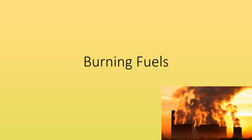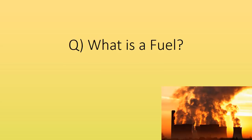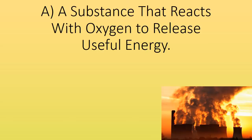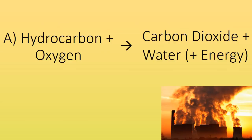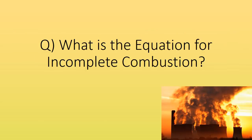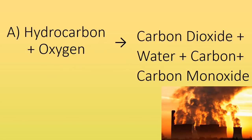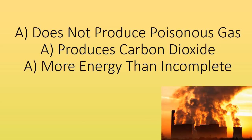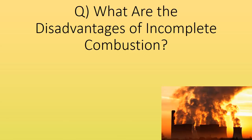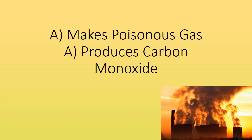Burning fuels. What is a fuel? A substance that reacts with oxygen to release useful energy. What is the equation for complete combustion? Hydrocarbon plus oxygen gives you carbon dioxide plus water, plus energy. What is the equation for incomplete combustion? Hydrocarbon plus oxygen gives you carbon dioxide, water, carbon and carbon monoxide. What are the advantages of complete combustion? Does not produce poisonous gas, and produces more energy than incomplete combustion. What are the disadvantages of incomplete combustion? Makes poisonous gas — produces carbon monoxide.